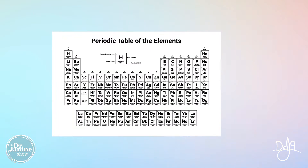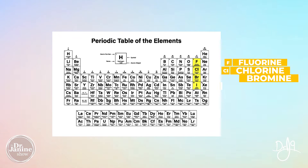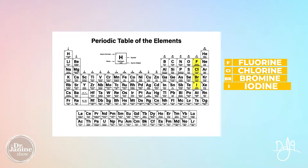The incidence of thyroid disorders in this area is very prevalent. When we discuss iodine deficiency, it's important to know that iodine is part of the halogen group on the periodic table. In that group of halogens, we also have fluorine, chlorine, and bromine. The chemical structure of these elements is very similar.